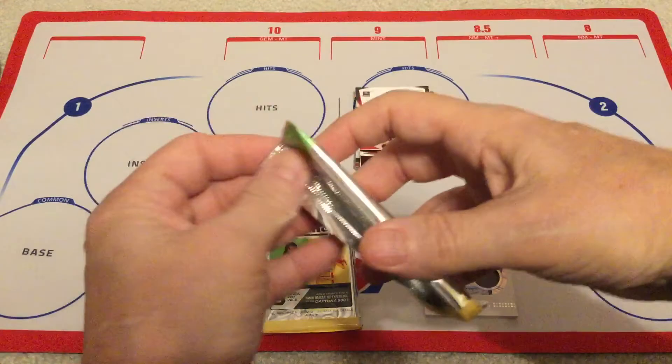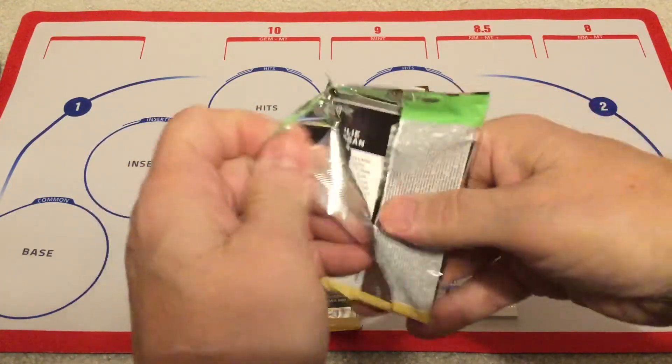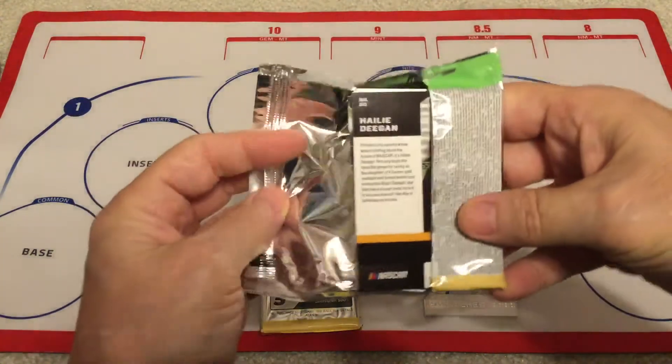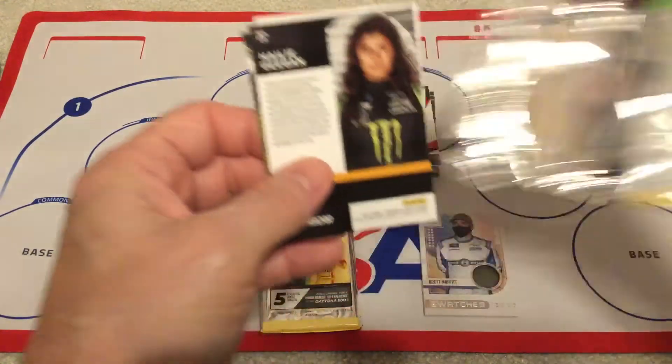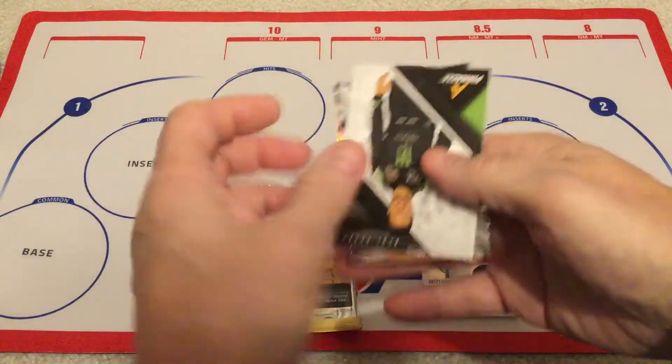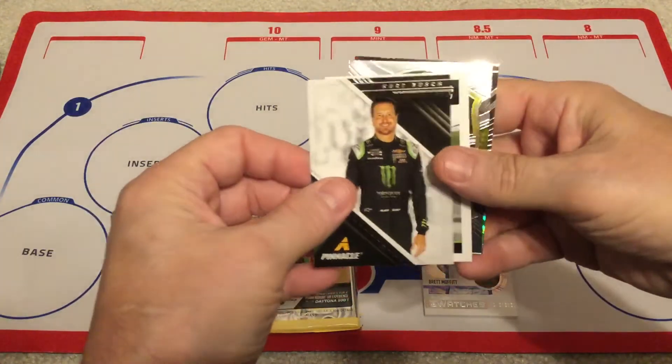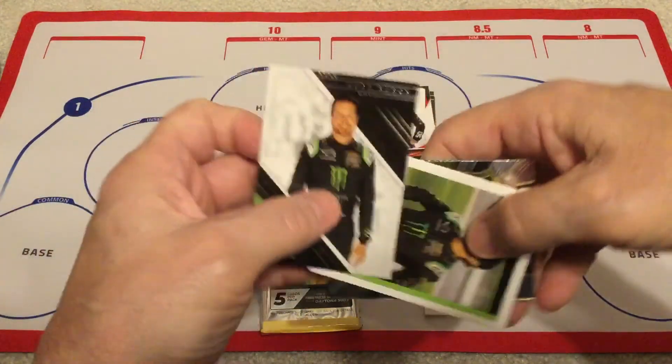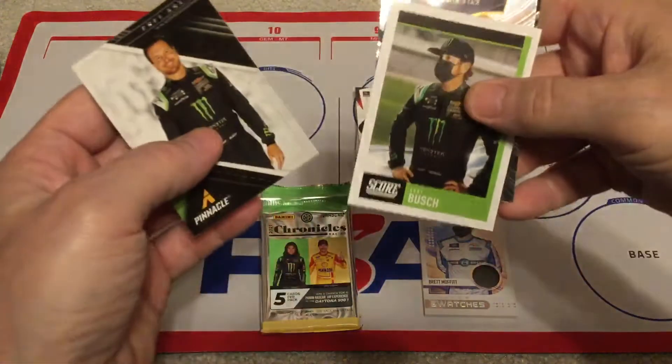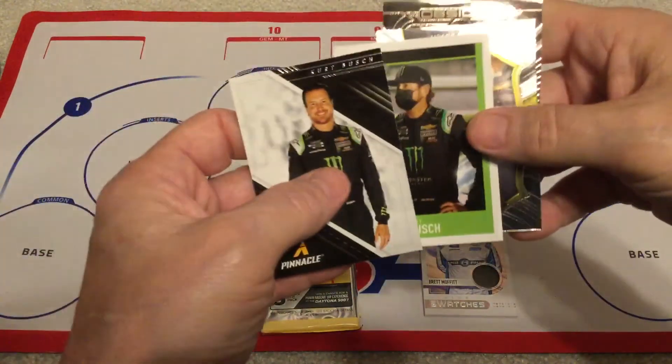All right. Pack number three. Oh, I see Hayley Deegan on the back. So, that's awesome. We'll start out with Kurt Busch.